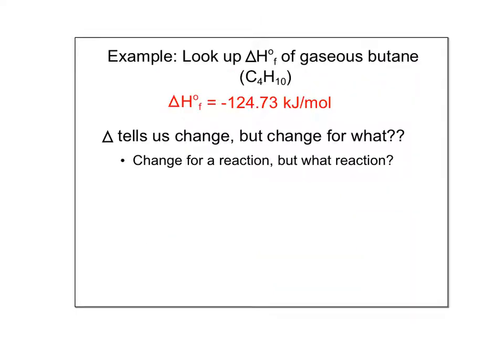Let's look up the delta H of formation of gaseous butane. You should find that it's negative 124.73 kilojoules per mole. So we know that that delta, that triangle tells us change. But change for what? What is this change coming from? I'm guessing it's some sort of reaction. But what reaction are we looking at? All I know is that it's butane, C4H10.